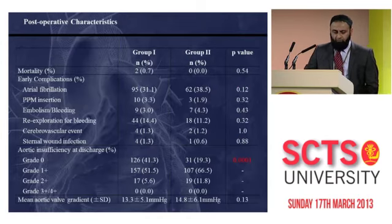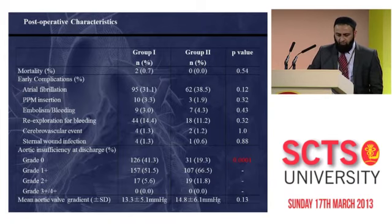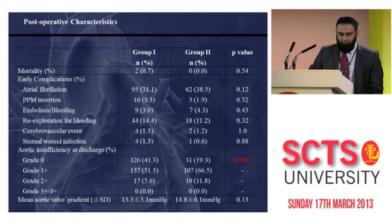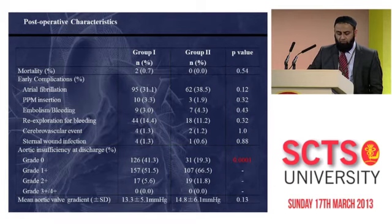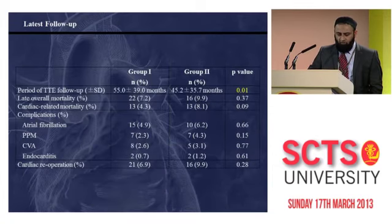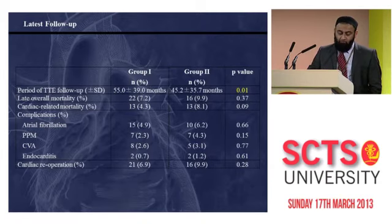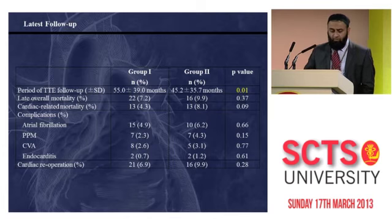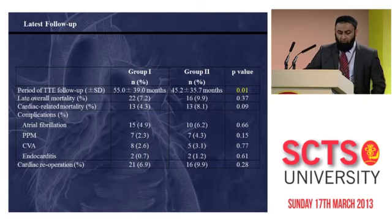In terms of postoperative characteristics, mortality and early complications were similar between the two groups. At discharge, there was a significant difference in aortic insufficiency between the two groups by definition, and notably some patients from the mild AI group had moved into the moderate AI group by discharge. Mean aortic valve gradient was similar between the two groups. At latest follow-up, there was a significant difference in the period of follow-up between the two groups — important because there is a significant difference in outcomes despite the shorter follow-up in the mild AI group.